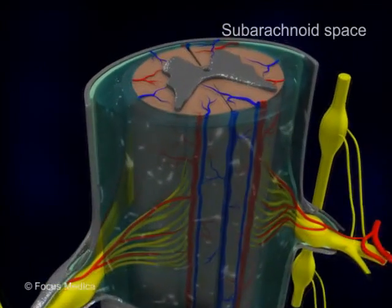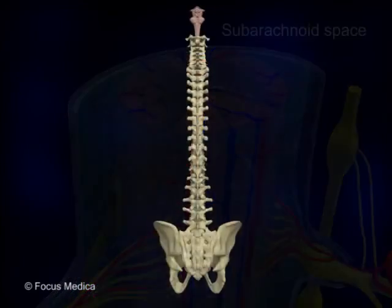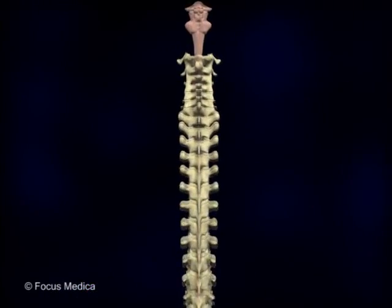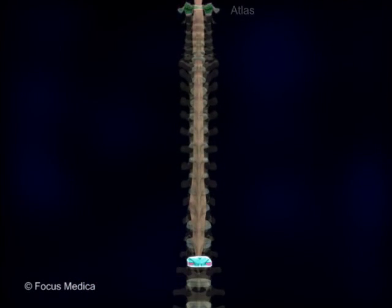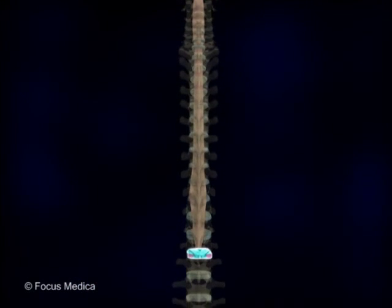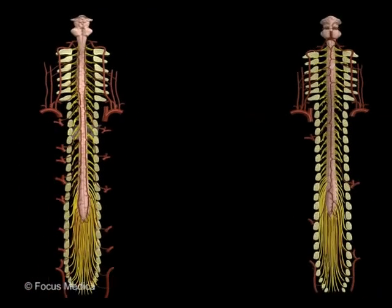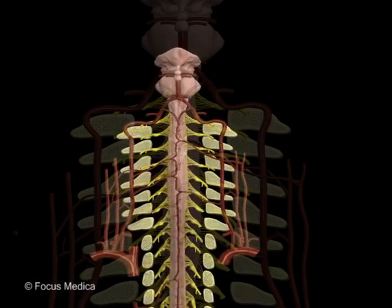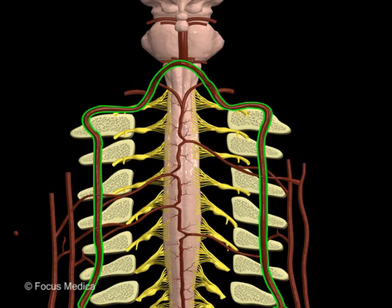It extends in the subarachnoid space from the level of the upper border of the atlas to the intervertebral disc between L1 and L2 vertebrae. It has two arterial supplies: a primary vertebral and a secondary supplemental from local segmental arteries.